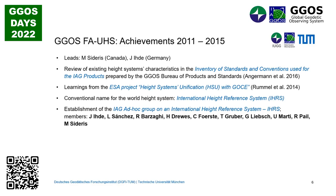These two leaders participated in an ESA project called Height Systems Unification with GOCE. Most of the learnings of this project were adopted to advance the objectives of the focus area. The first thing they did was to define a conventional name — no more 'vertical datum definition', no more 'world height system', no more 'global vertical network'. They called it the International Height Reference System. In 2013–2014, an ad hoc group was established to work on how the definition and realization of this IHRS should look.